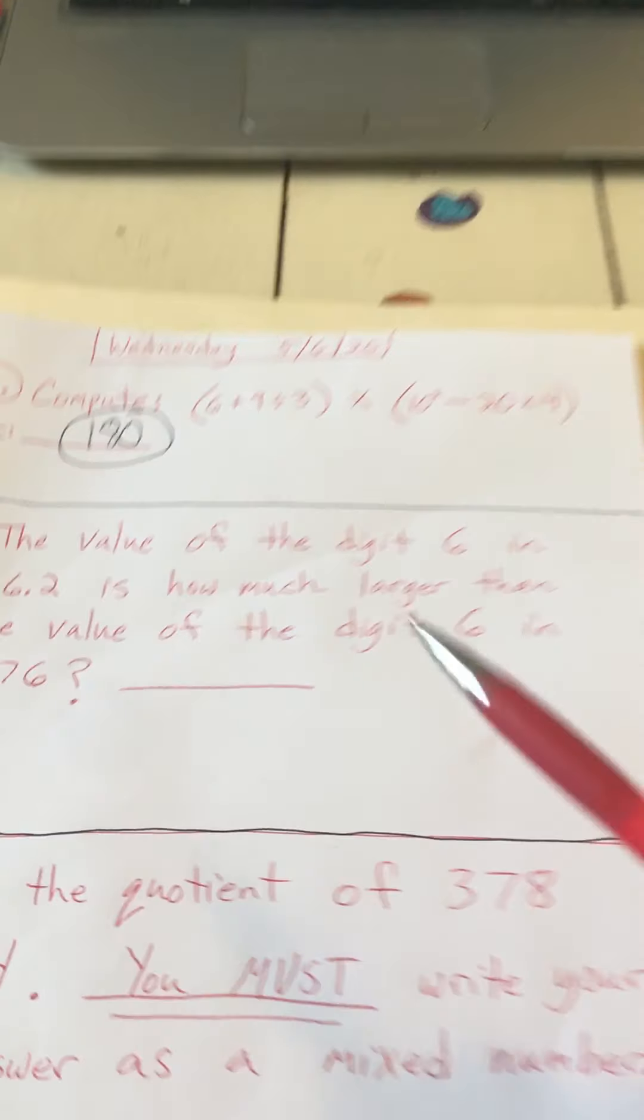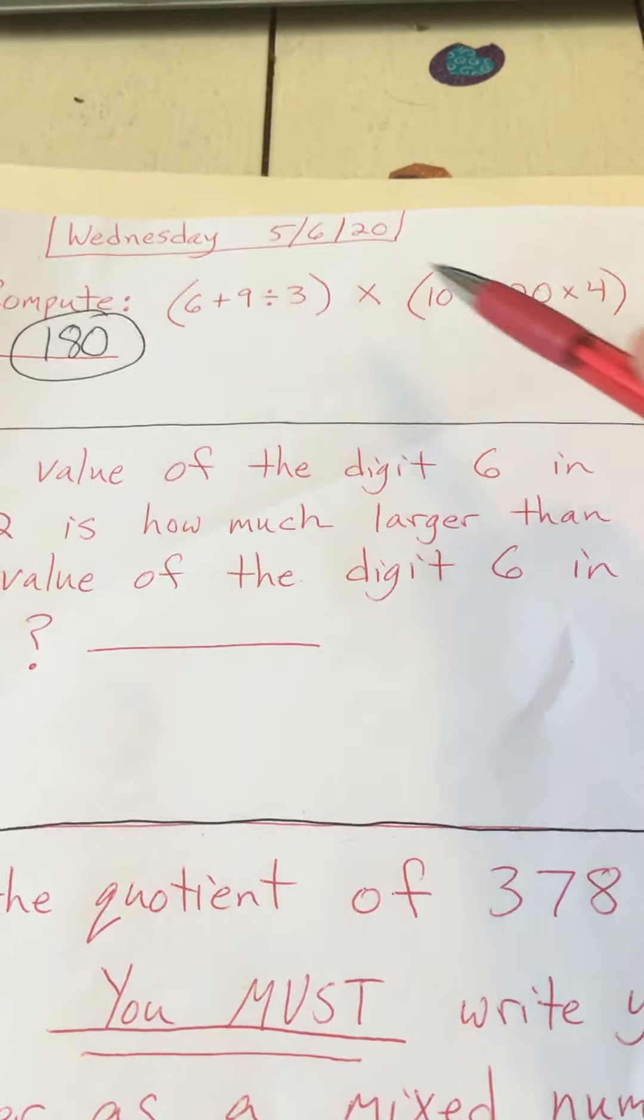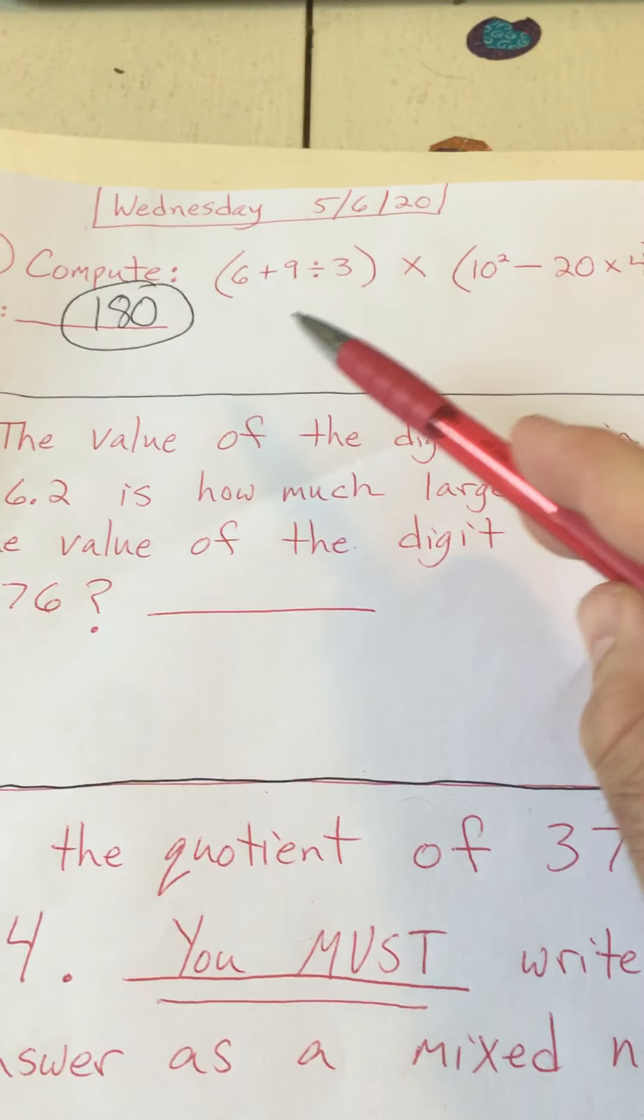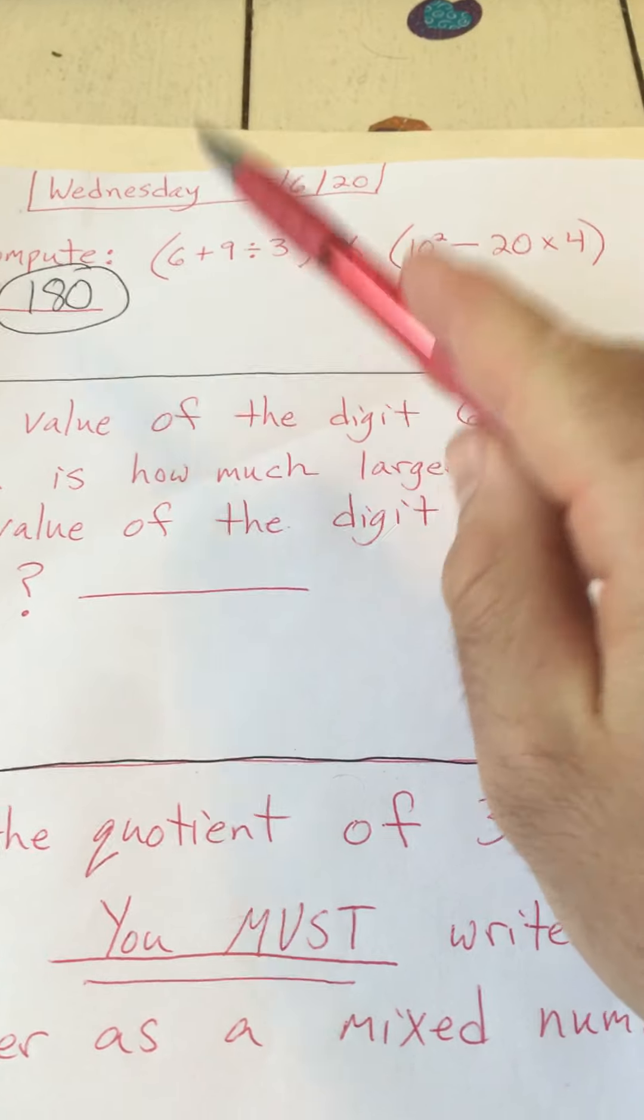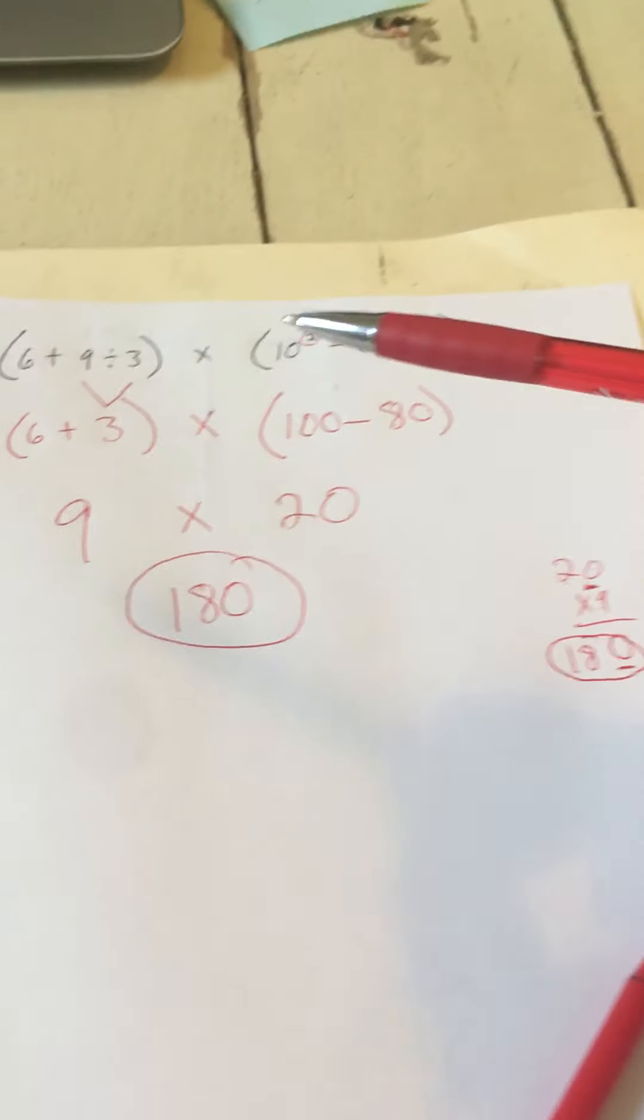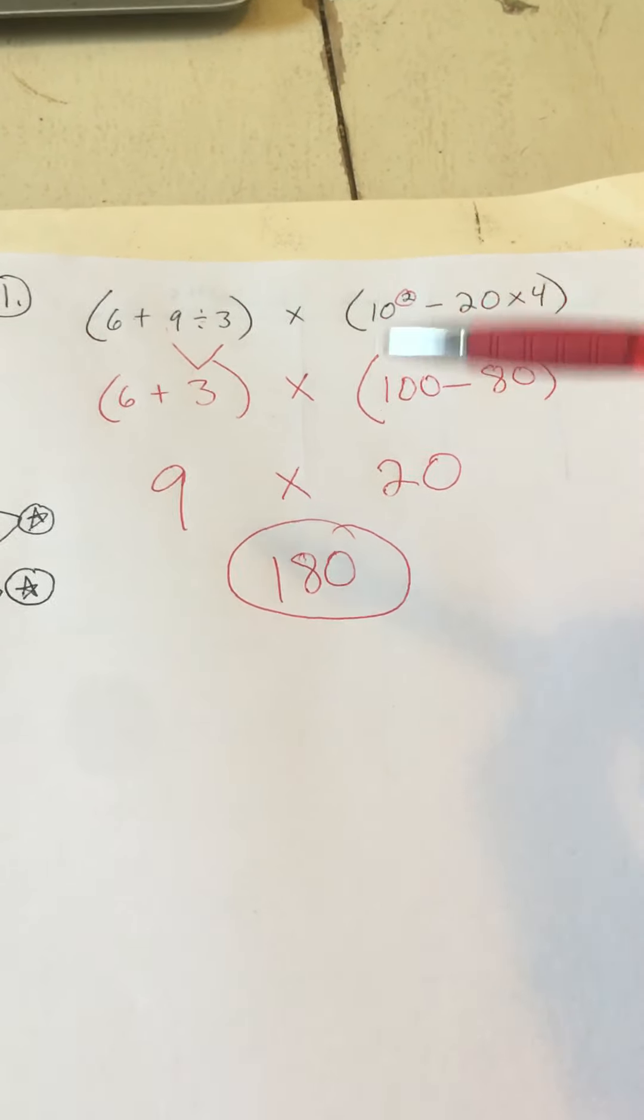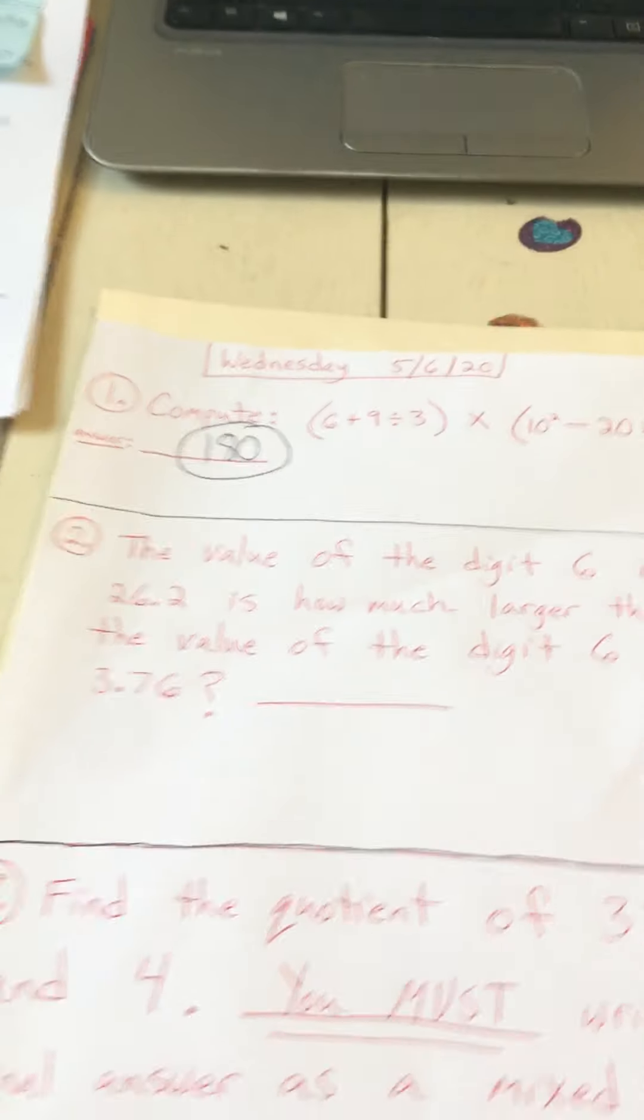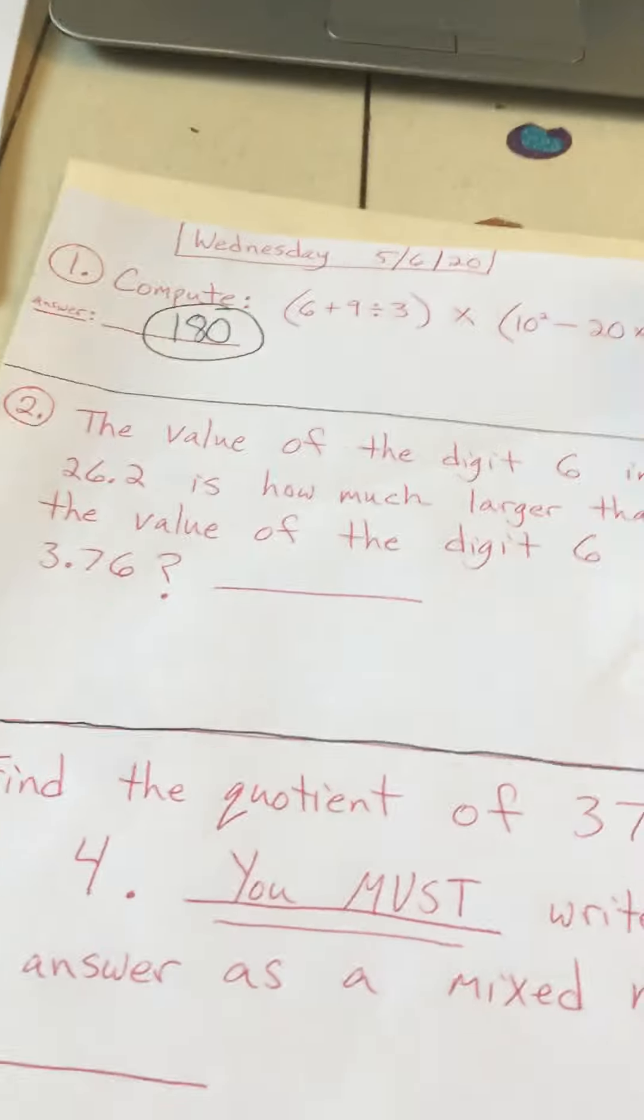180. Pretty tricky. Notice that every time we've done order of operations, they have gotten a little bit harder every time. So don't feel bad if you didn't get this right. We're going to keep practicing these. But check real carefully over what I did in what order and why. Nice job if you got 180, great job.